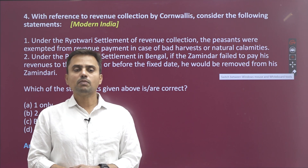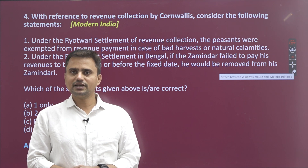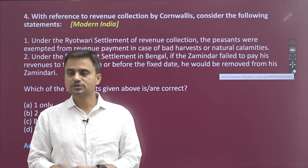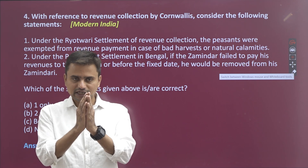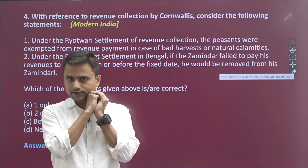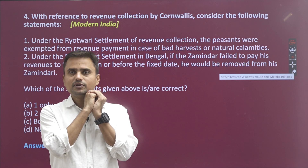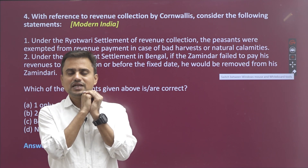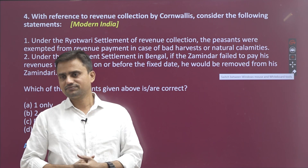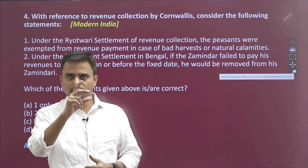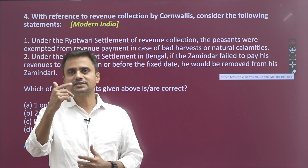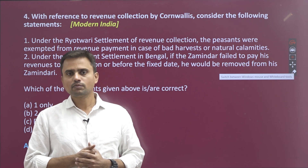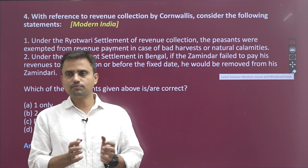Money was the major requirement here — certainty of revenue was the priority. The target revenue had to be collected without shortfall. This is because it was not a state — it was the East India Company, a commercial enterprise with a board of directors and shareholders to whom they had to be answerable.